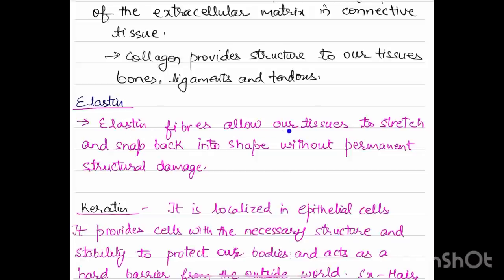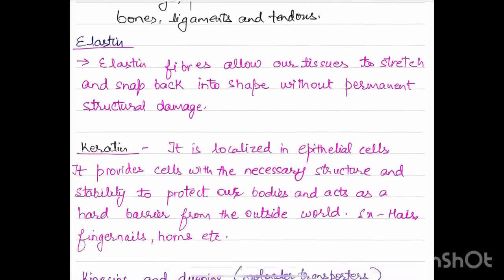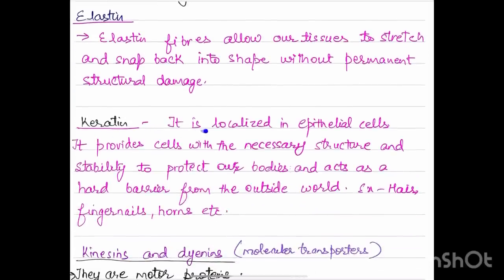Elastins are fibers that allow our tissues to stretch and snap back into shape without permanent structural damage. Keratin is localized in epithelial cells and provides cells with the necessary structure and stability to protect our bodies and acts as a hard barrier from the outside world, for example hair, fingernails, horns.